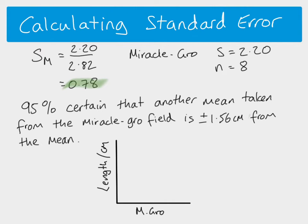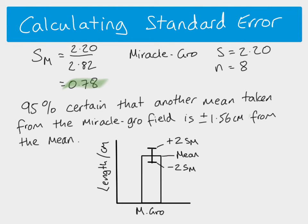If we show this on a graph it can be easier to understand. We plot the mean for Miracle Grow and add an error bar. This error bar is drawn using our 95% confidence interval, which is what we mean by two standard errors. The mean we calculated for Miracle Grow was eight centimeters. The top of the error bar represents two standard errors above the mean — 1.56 centimeters above — and the bottom represents minus two standard errors, 1.56 centimeters below the mean.